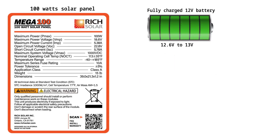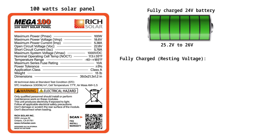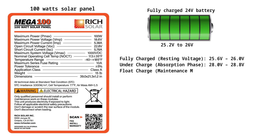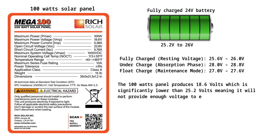A typical 12-volt battery is often rated around 12.6 volts when fully charged. At this voltage, the 100-watt solar panel outputting 18.6 volts will still be able to push electric current into the battery. In a 24-volt solar setup, a battery typically operates around 25.2 volts when fully charged, and the 100-watt panel's 18.6 volts is significantly lower, meaning it will not provide enough voltage to effectively charge the 24-volt battery.